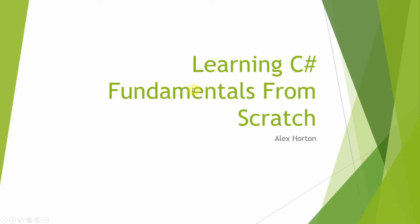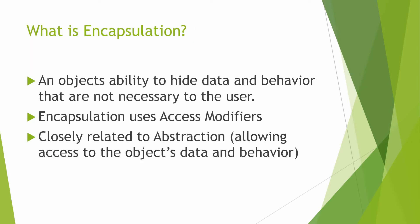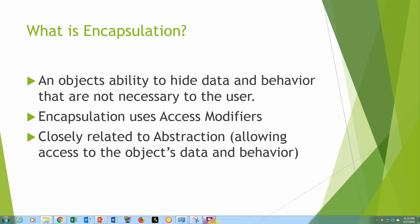So with that, let's begin. Today we're going to talk about encapsulation. Encapsulation is related closely with abstraction, and we'll talk about abstraction in the next video. It's one of the four pillars of object-oriented programming. Encapsulation is an object's ability to hide data and behavior that are not necessary to the user.